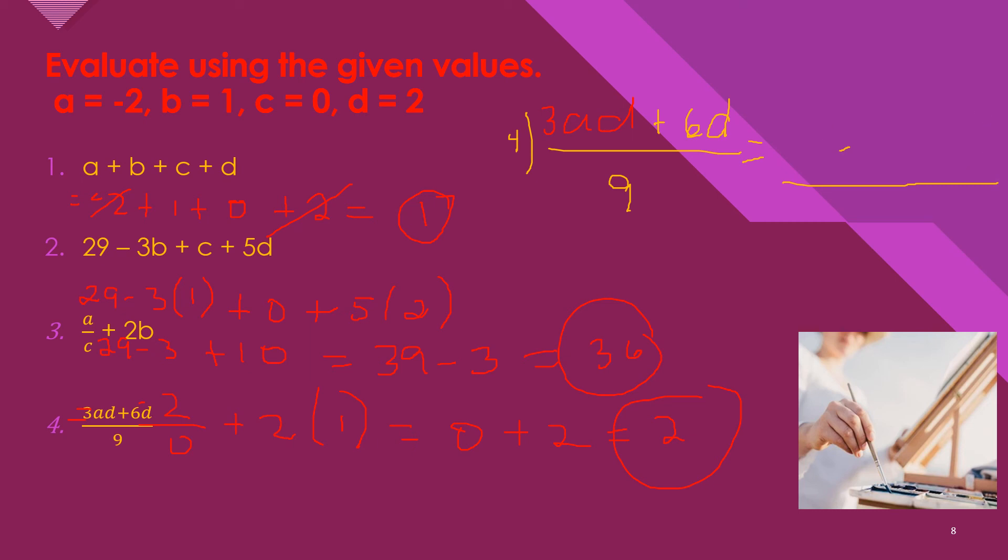So we have again 3 × -2 × 2 + 6 × 2 over 9. So we have 3 × 2 is 6, -6 × 2 is -12. -12 + 12 equals 0 over 9. So we have 0 over 9. Actually this answer is undefined. No, this is undefined, but since that's done and the result, we cannot do anything about it.